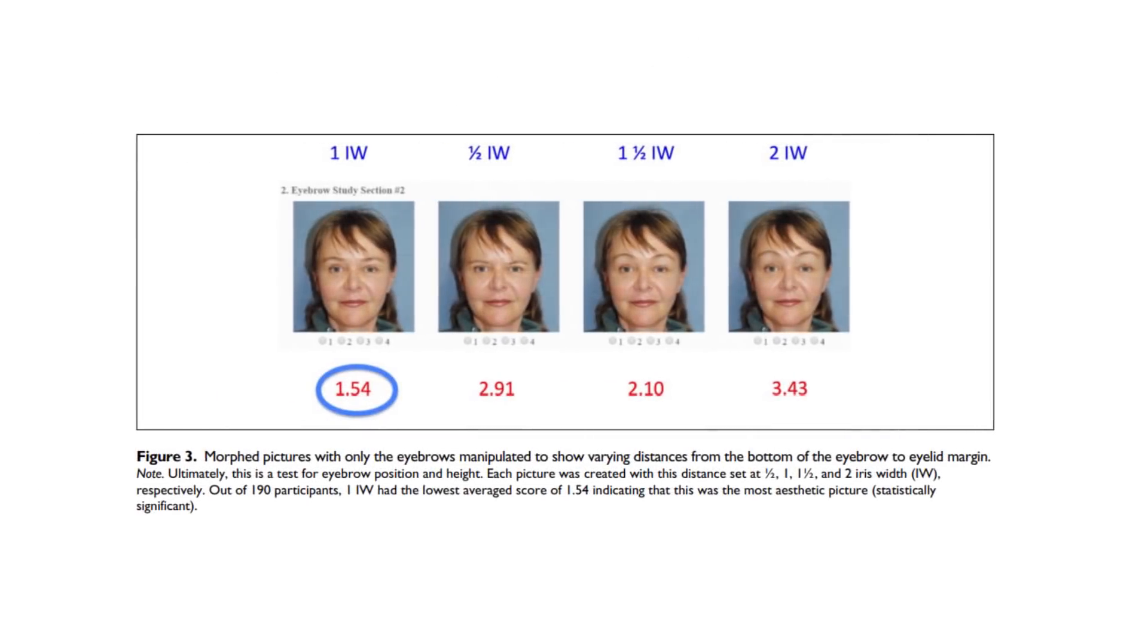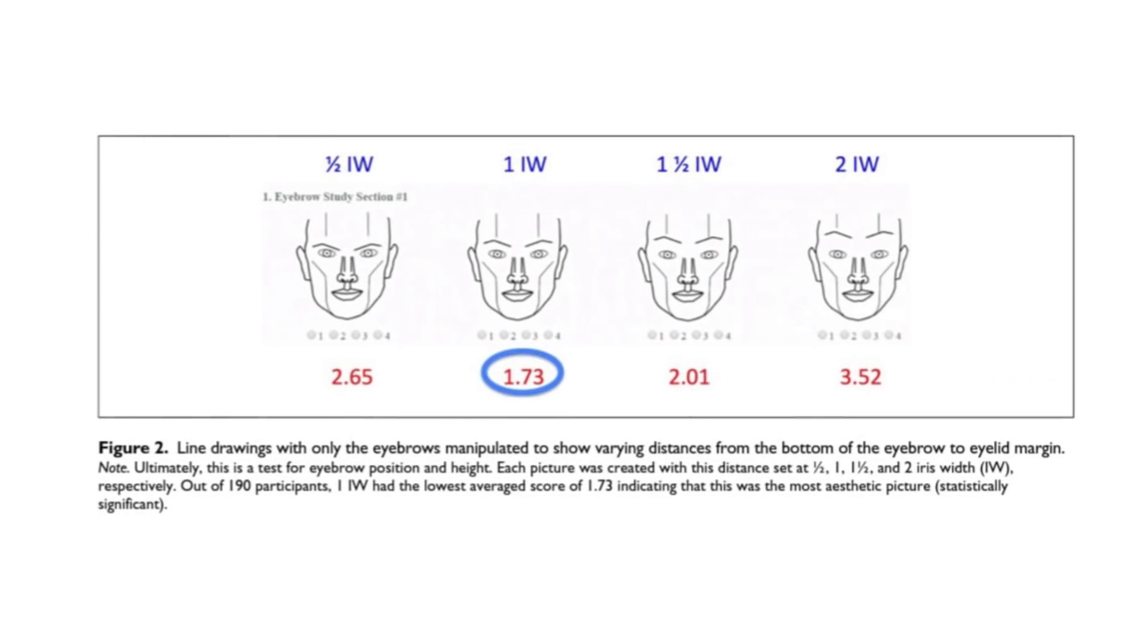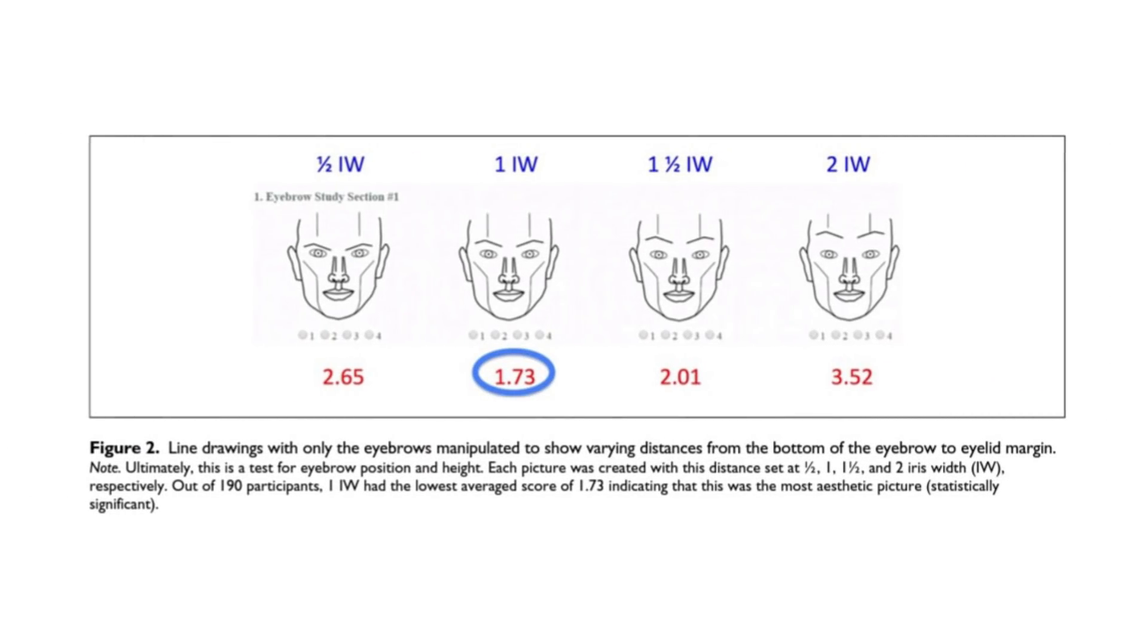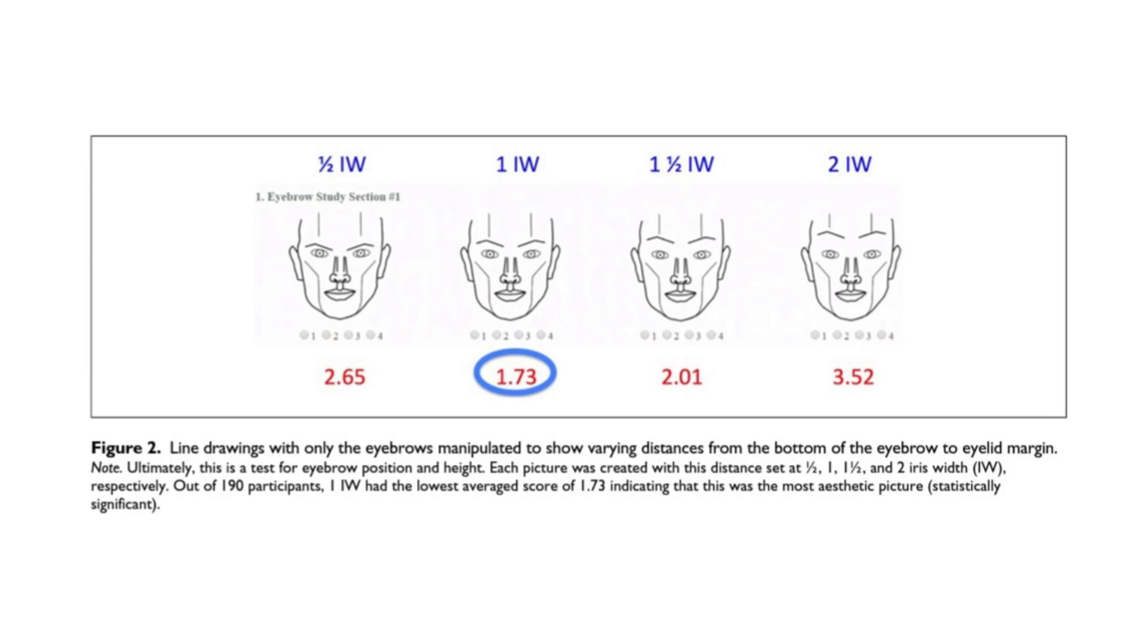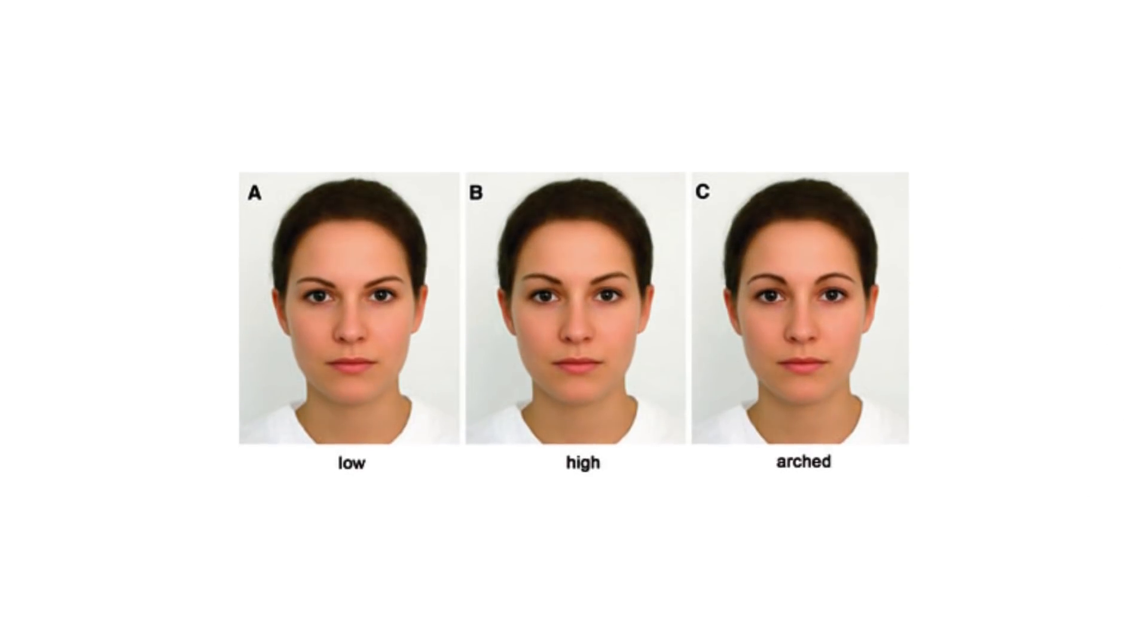In these figures, Young examined the ideal eyebrow height and hypothesized that the ideal distance would be one iris width. This theory was found to be statistically correct in both line drawings and morphed pictures. The group studied by Young had shifting opinions where initially they preferred a slightly higher brow position at one and a half iris width and then later shifting to a half iris width. Young theorized that the shifting opinion could be due to the fact that the lower brow position is more common in the normal population than the higher one.